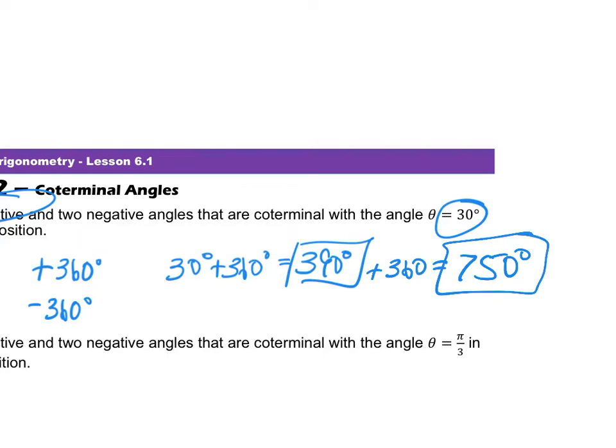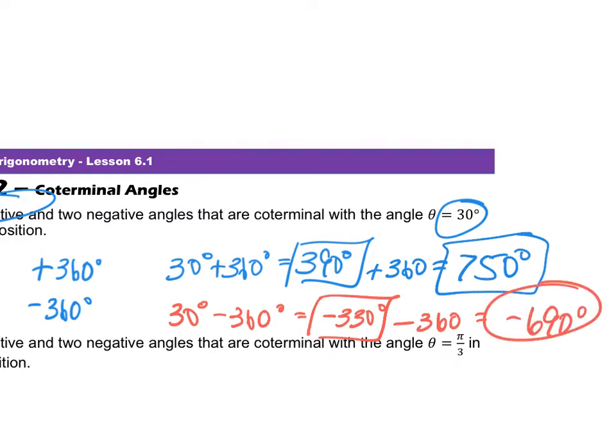Now, it asks you to find two negative ones. So I'm going to, again, start with 30. How would I find negative? I would subtract 360. So when I say 30 minus 360, I get negative 330 degrees. That's one coterminal negative. To find another one, I just subtract 360 again, and that gives me negative 690 degrees.